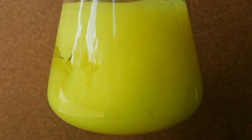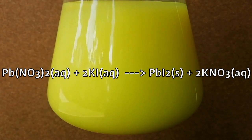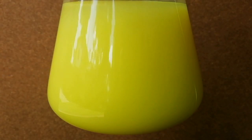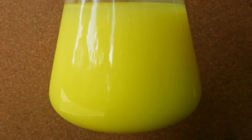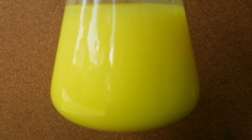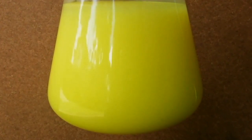Then I add the lead nitrate solution to the flask. In my case I had to heat the mixture again to dissolve all the lead iodide.